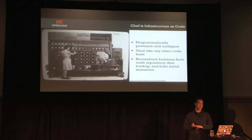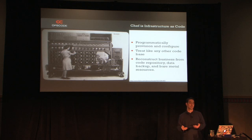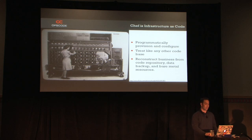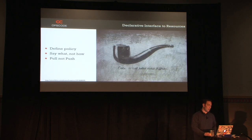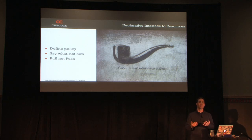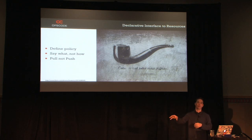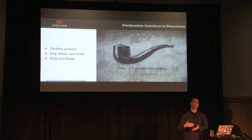Everything in your infrastructure is backed like any other code base. And the reason you want to do this is because you can reconstruct your business from source backups, backups of your data, and access to new bare metal or a new cloud. Chef gives you a declarative interface to your infrastructure. You're saying this is what I want — not how you want it. You're not saying apt-get install this. You just say, I want the Nova compute package, and Chef will go off and happily enforce that policy for you.